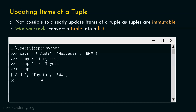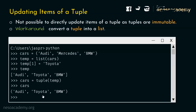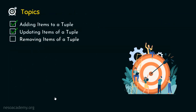The next task is to convert this list back to a tuple. We will use the tuple() method. Let's type: cars = tuple(temp). Let's hit enter and type cars. We are getting this tuple with three items: Audi, Toyota, and BMW. It can be observed that Mercedes is replaced by Toyota. With this, we are done with this topic.